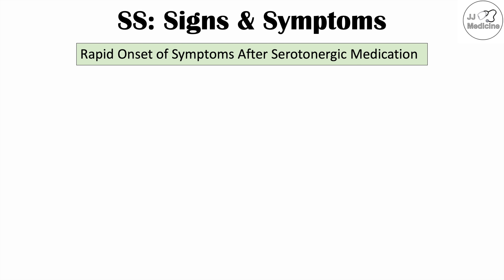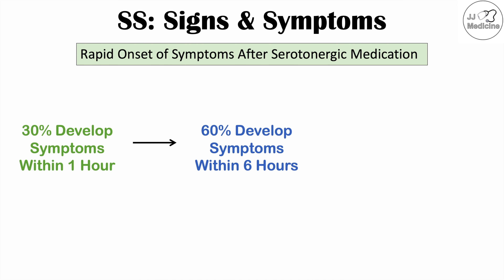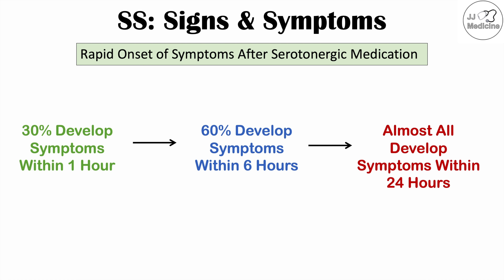Serotonin syndrome has a rapid onset of symptoms after a serotonergic medication has been increased too high or an additional serotonergic activating medication is added. About 30% of patients develop symptoms within one hour, 60% within six hours, and almost all patients develop some symptoms within 24 hours of the addition of the new medication.